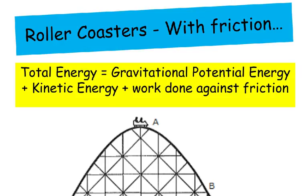So what about roller coasters with friction? Well the total energy is equal to the gravitational potential energy, plus the kinetic energy, and the work done against friction.